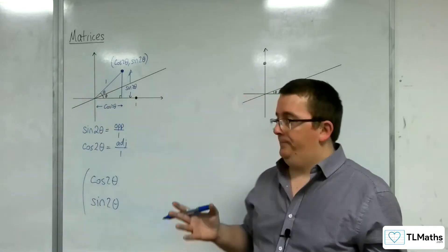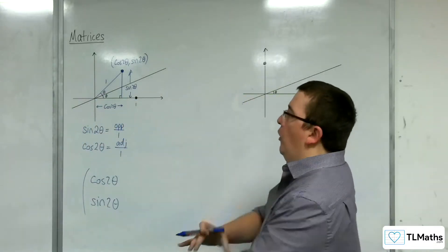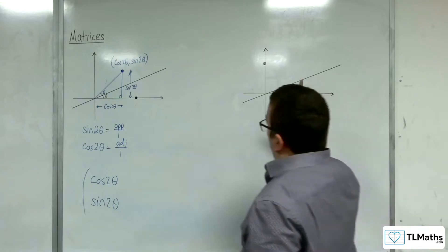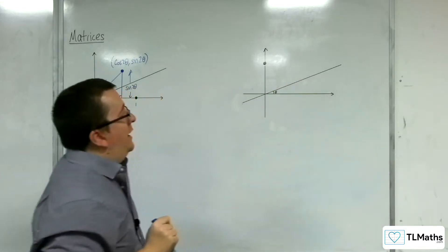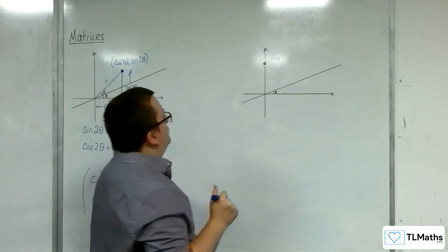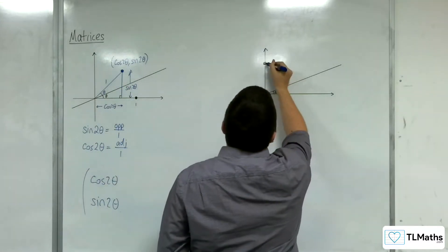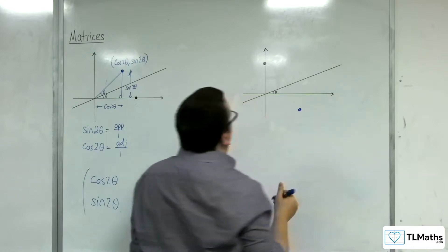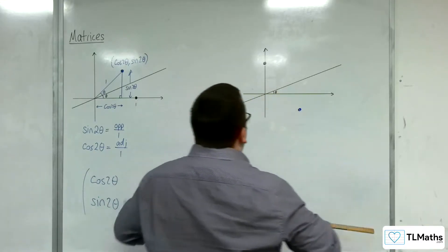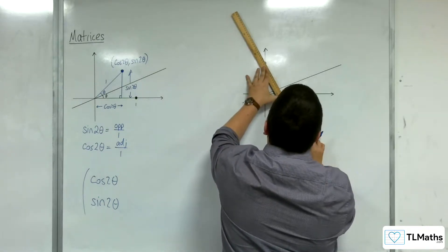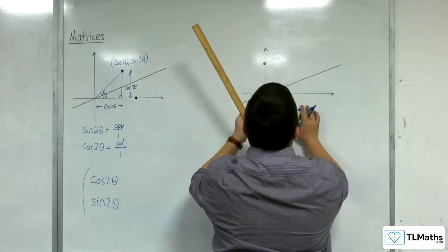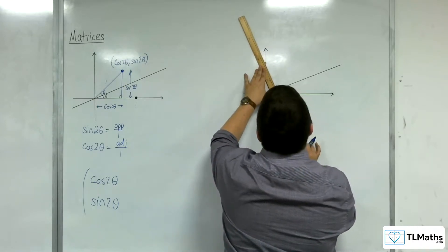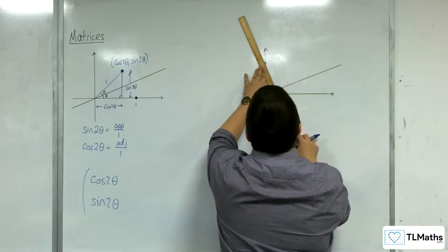That's the easy bit, the first column in our reflection matrix. The more challenging bit is looking at what happens to (0,1). Now, (0,1) is going to get mapped somewhere down here. I'm going to do this fairly accurately, making sure this makes a right angle.